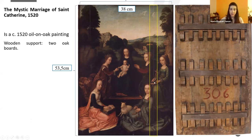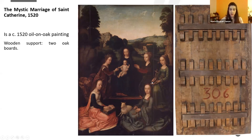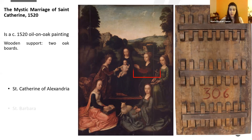The painting shows the Virgin Mary with the baby Jesus Christ in the middle, and five virgin saints: Saint Catherine of Alexandria, Saint Barbara, Saint Ursula, Saint Margaret of Antioch, and Saint Agnes.